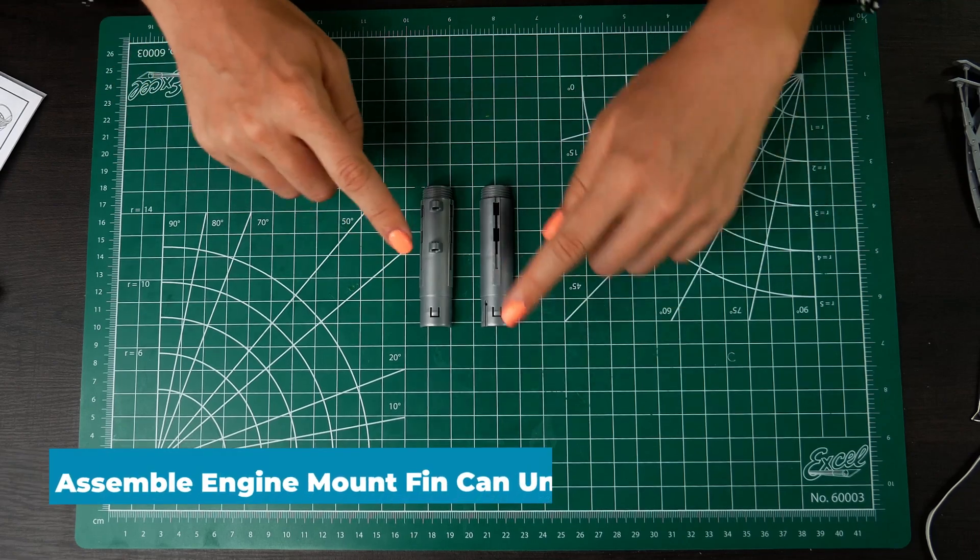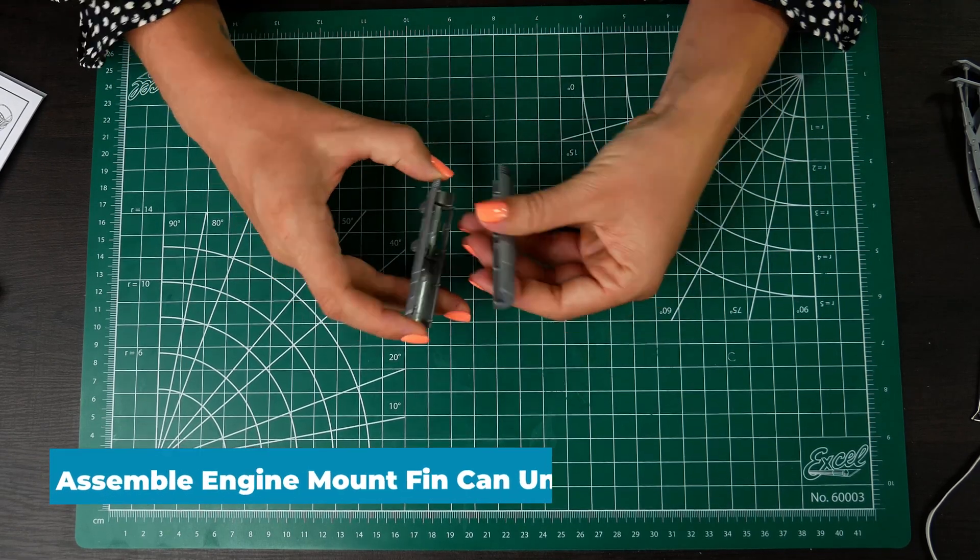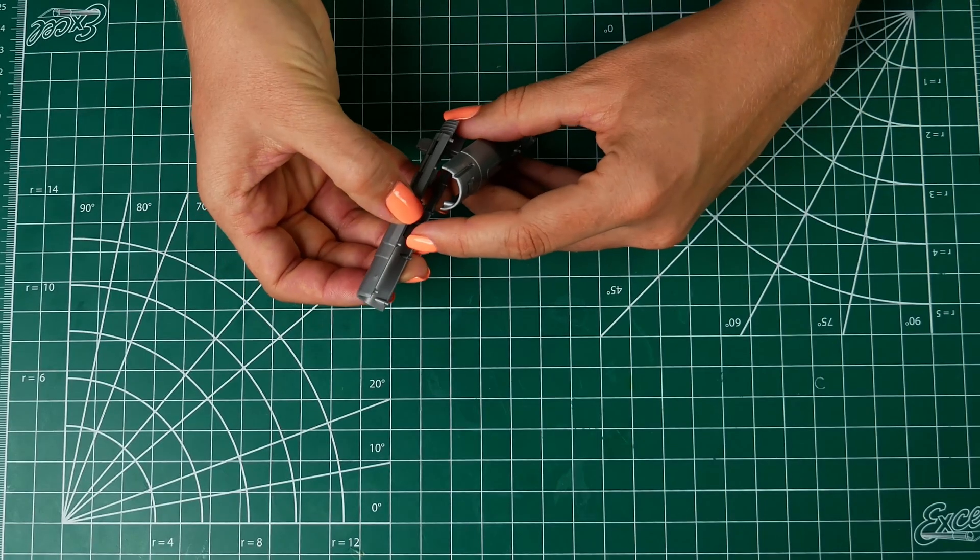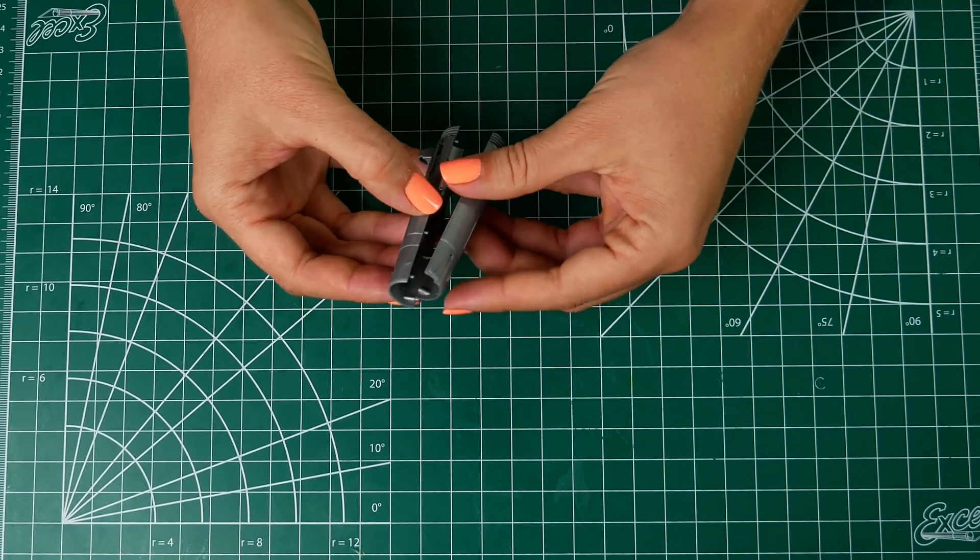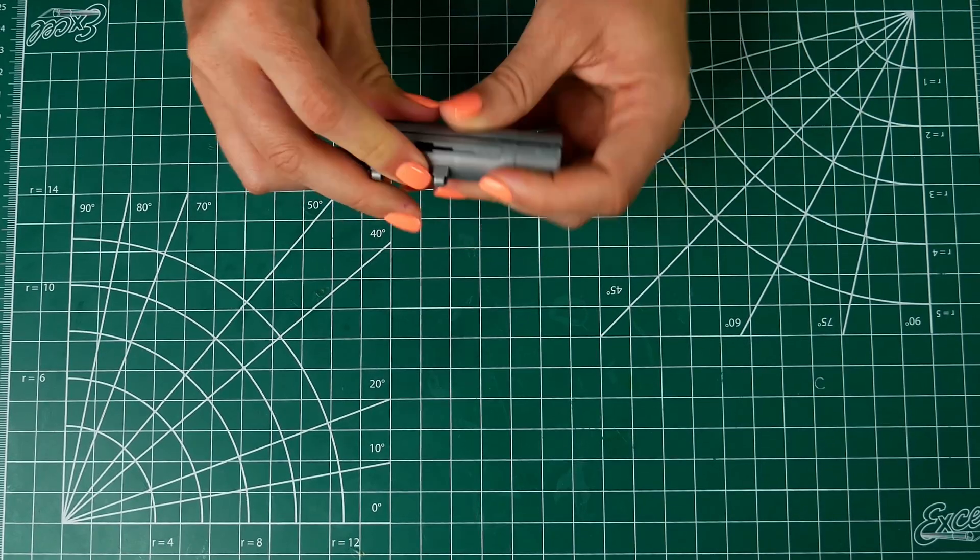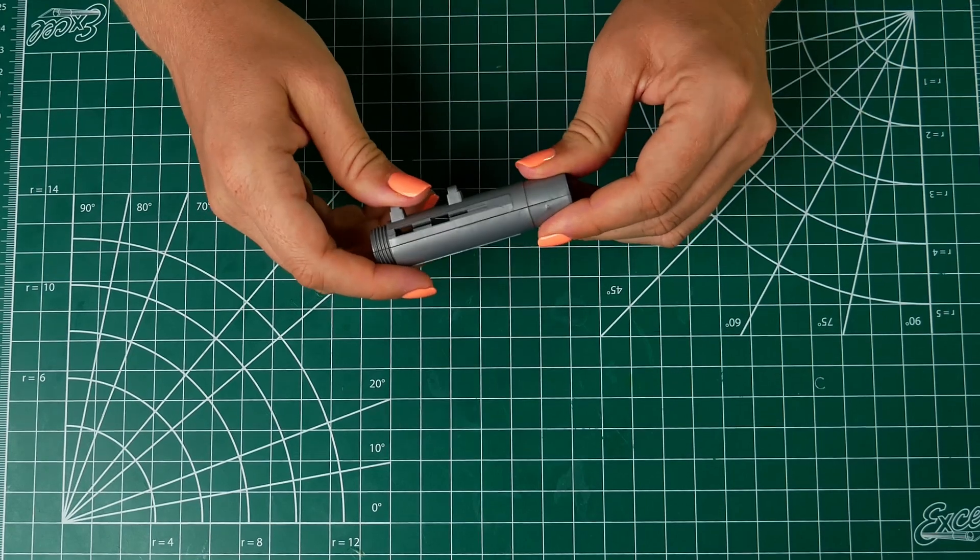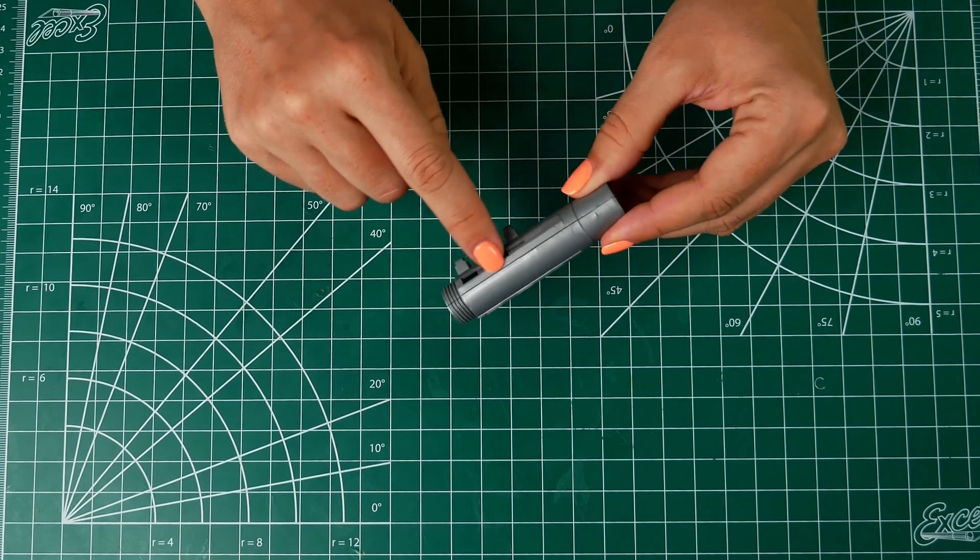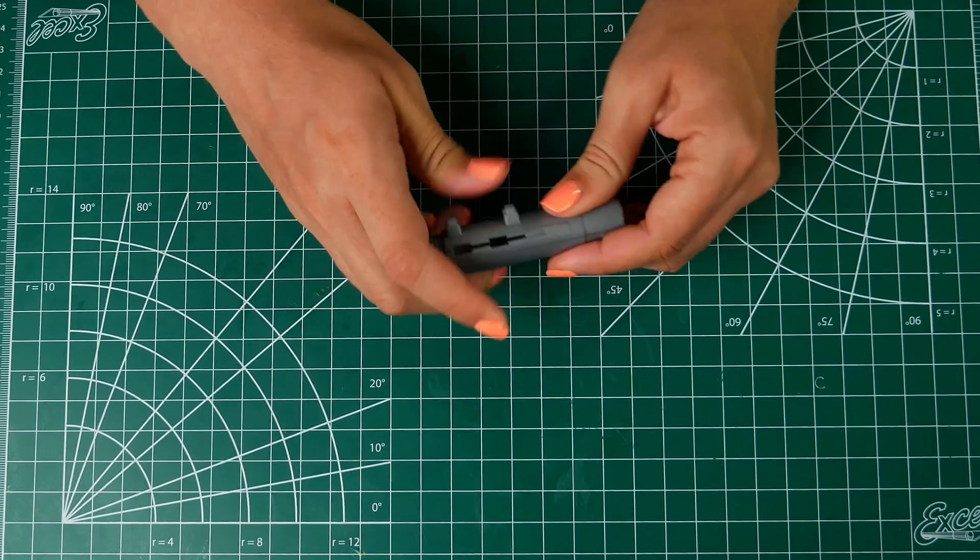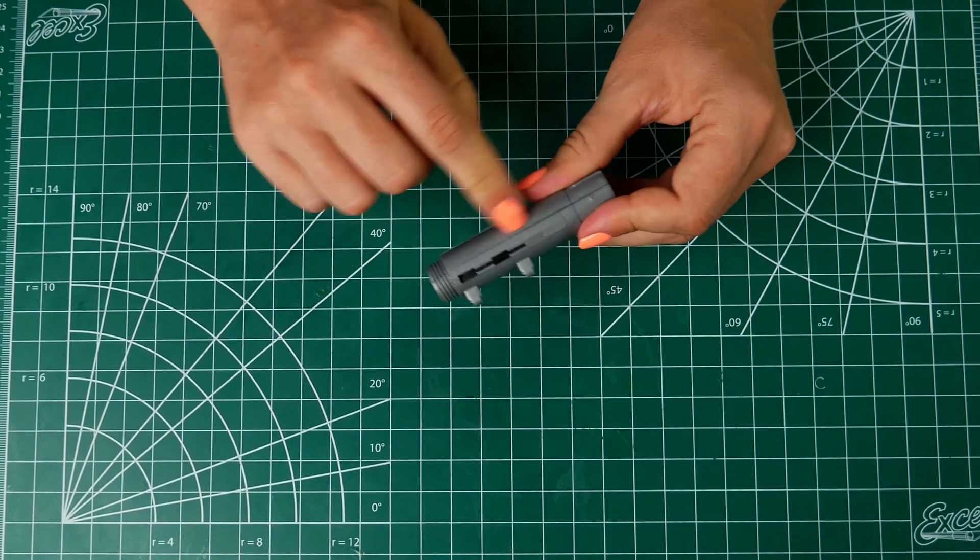Alright, for your first step, you're gonna grab the two halves of the engine mount fin can and push them together. These little gray spikes go into these divots, so just line it up. You want to make sure when you do this that there's no gap in the seams, so make sure they're really firmly pushed together so that it's all flush.